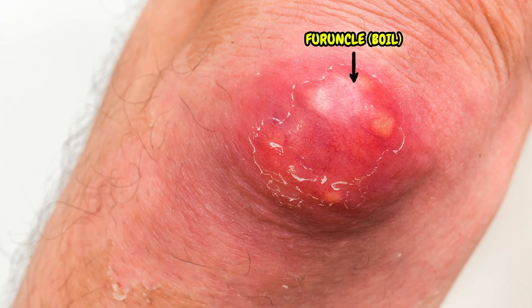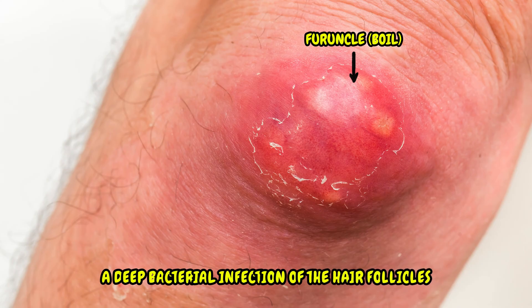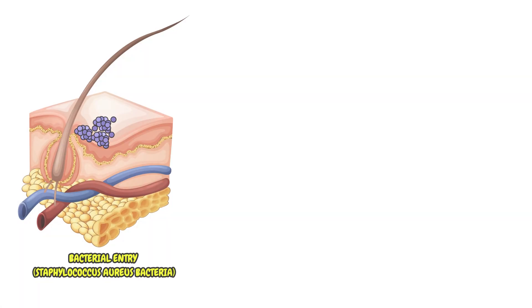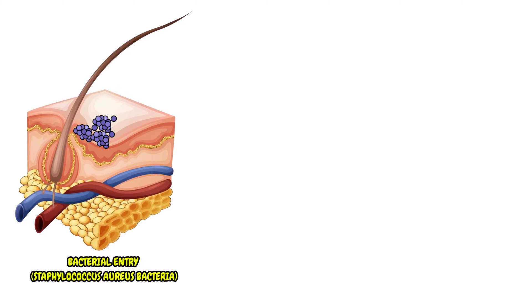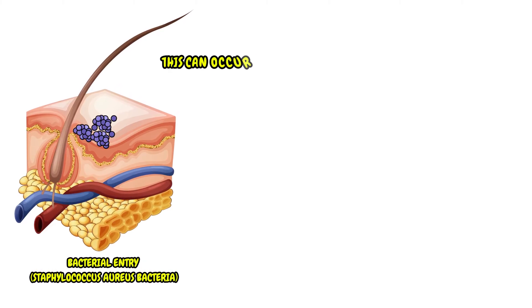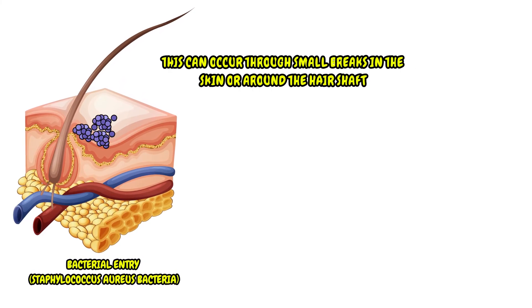A furuncle, commonly known as a boil, is a deep bacterial infection of the hair follicles. The process often begins with the entry of bacteria, commonly Staphylococcus aureus, into a hair follicle. This can occur through small breaks in the skin or around the hair shaft.